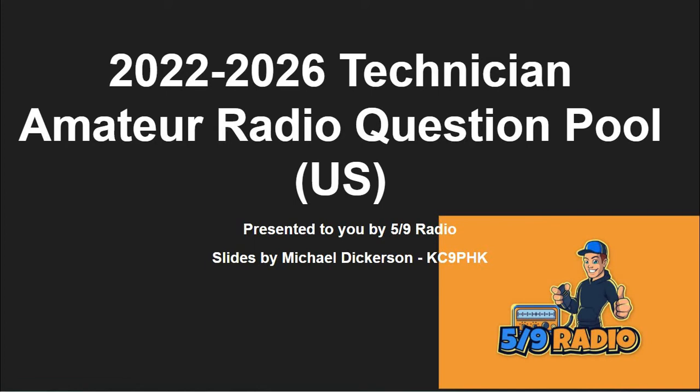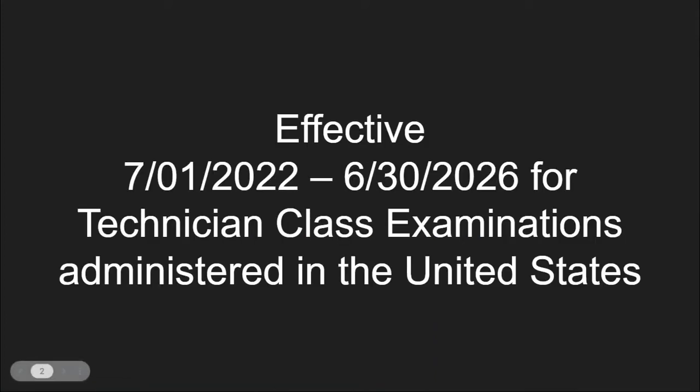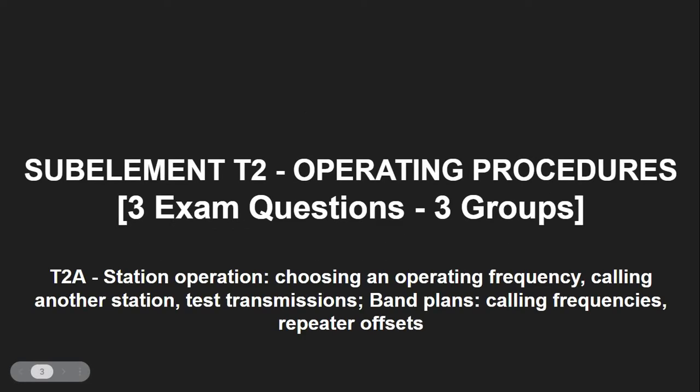This is the 2022-2026 Technician Class Amateur Radio Question Pool for the United States. It goes into effect July the 1st, 2022, and goes until June of 2026. Let's start off with sub-element T2, covering operating procedures.